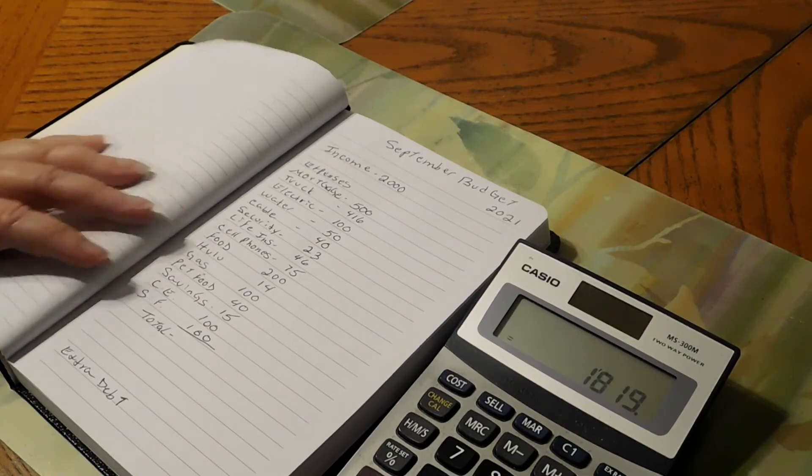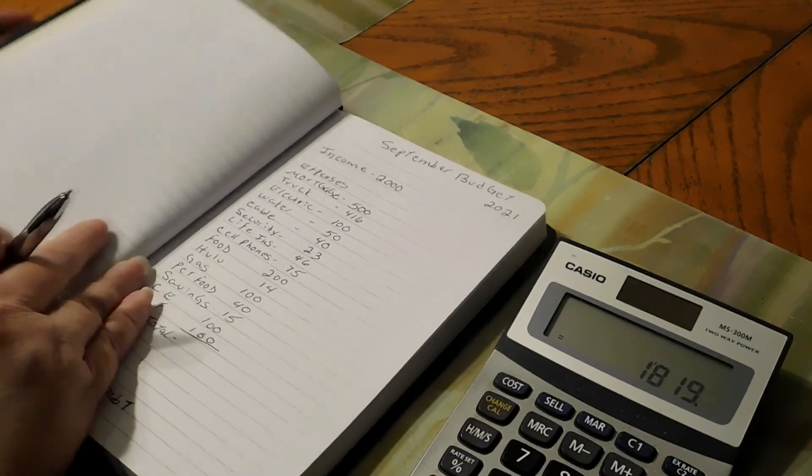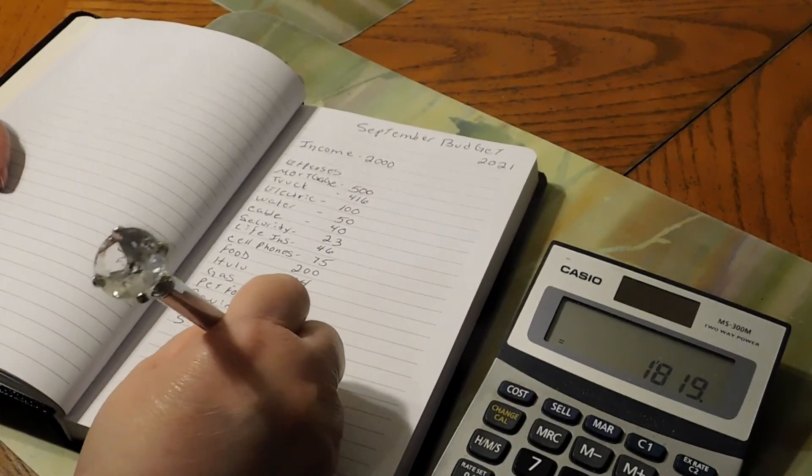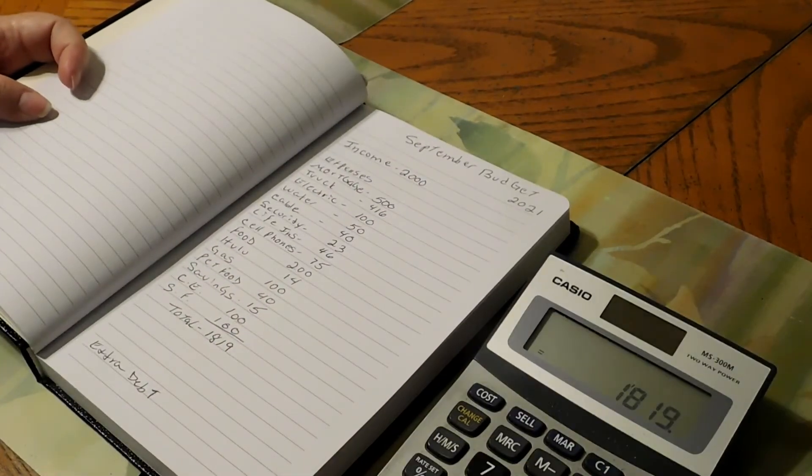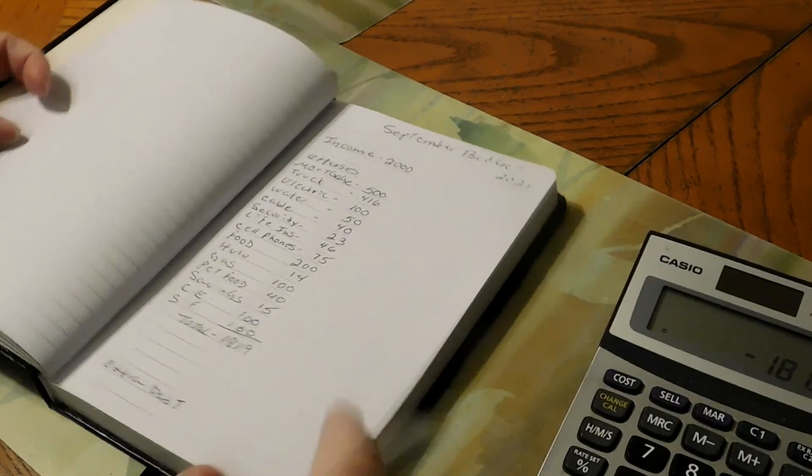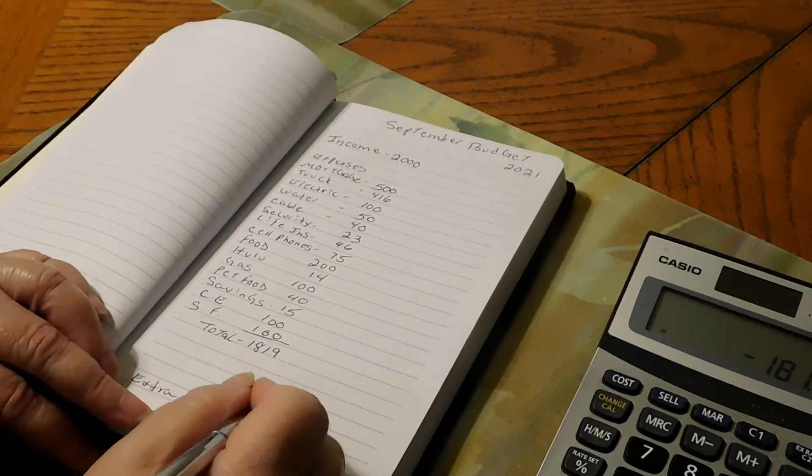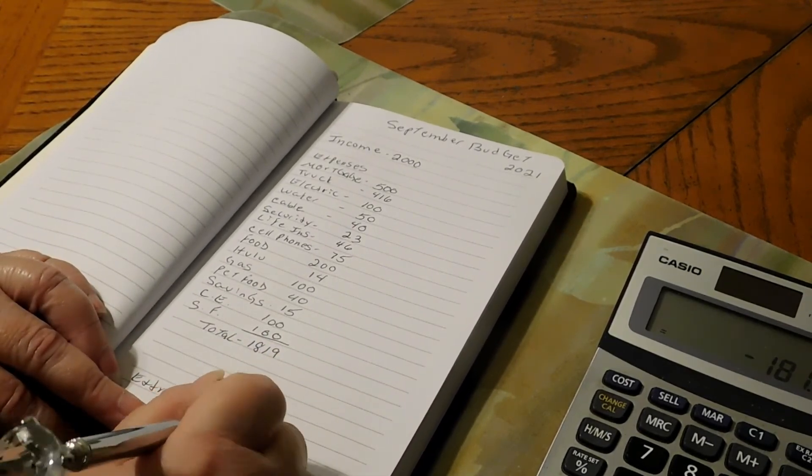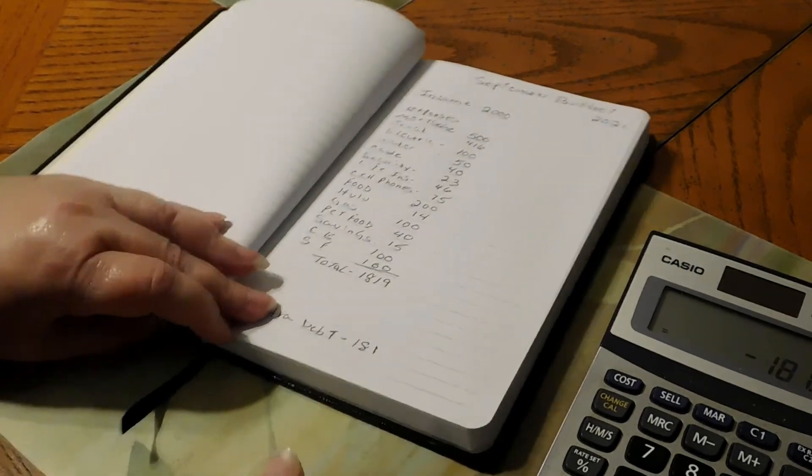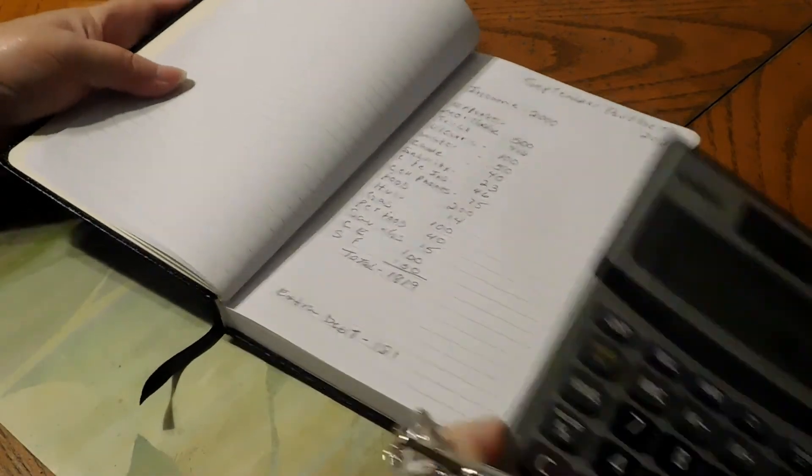Alright, $1,819. We're going to minus $2,000. Gives us an extra debt payment of $181 for extra debt payment, which is not bad. But that's our budget for September.